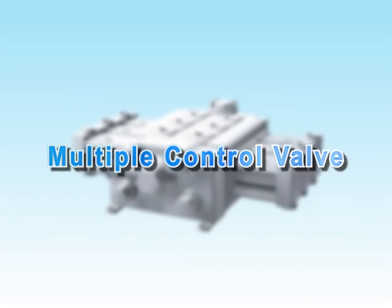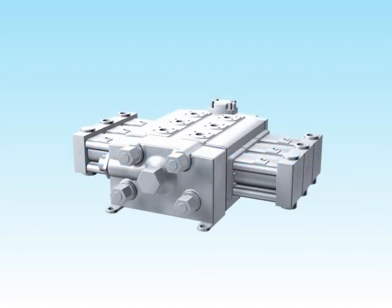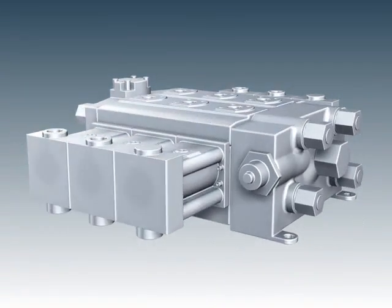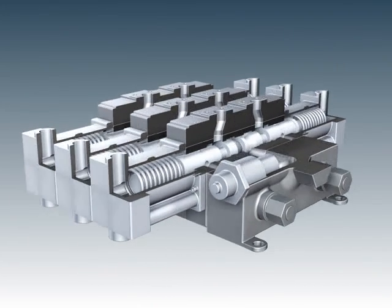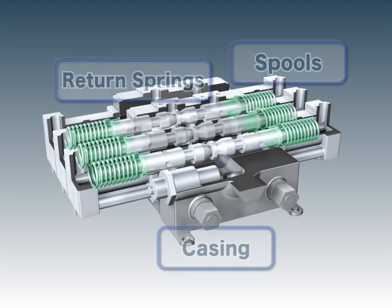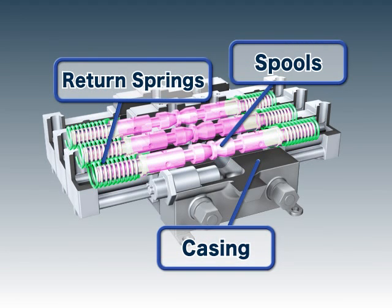The multiple control valve redirects the highly pressurized hydraulic oil from the variable pump using the pilot pressure received from the remote control valve. The valve is composed of a casing, spools which redirect the hydraulic oil, return springs which return the spools to their original positions, and other components.